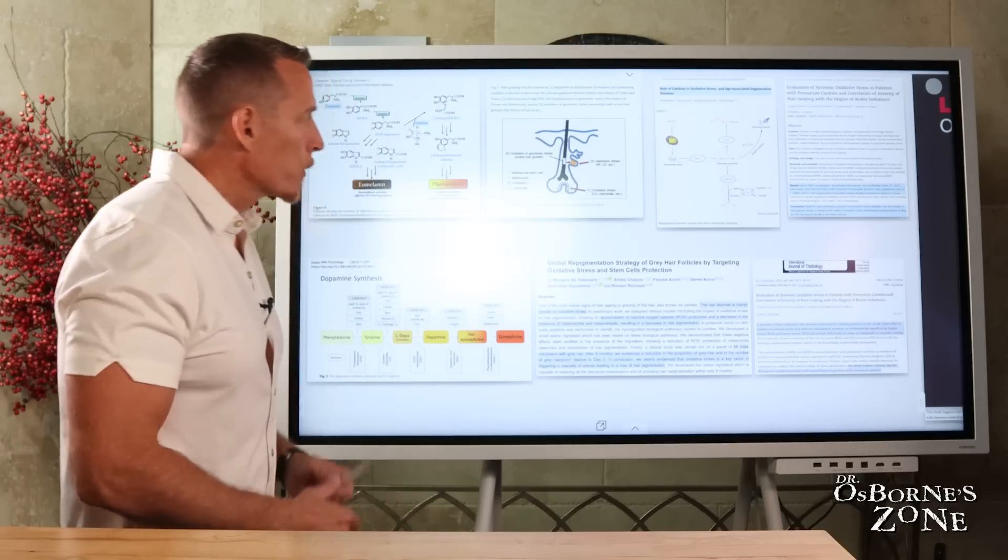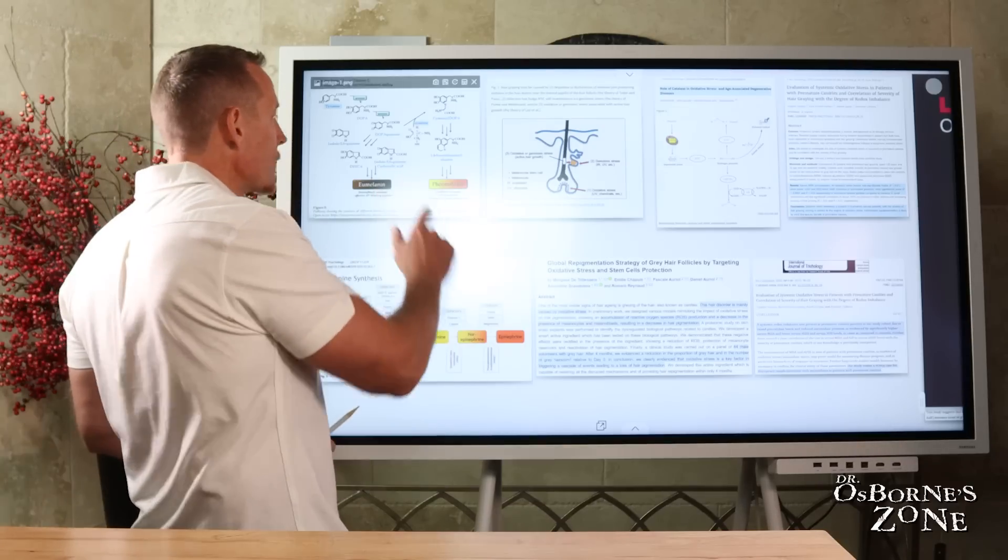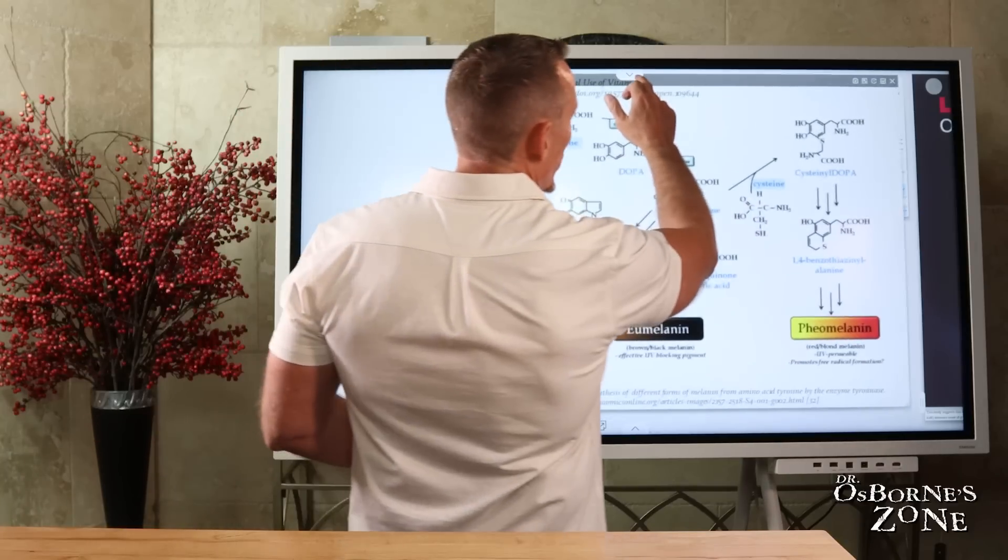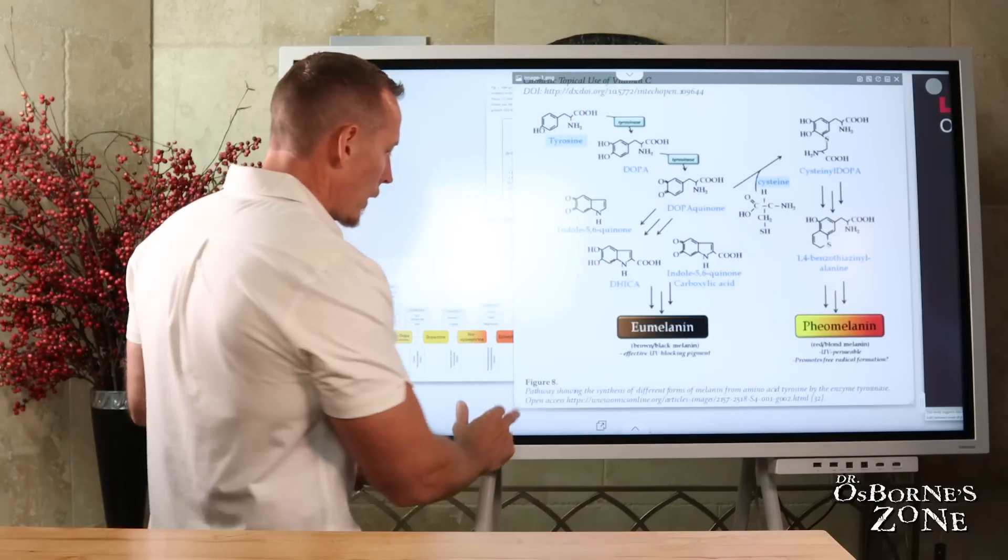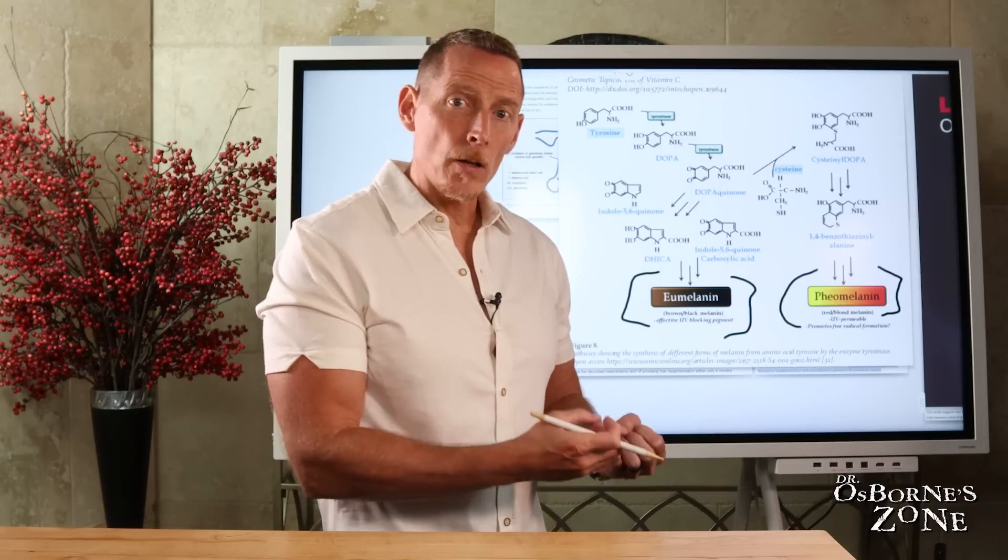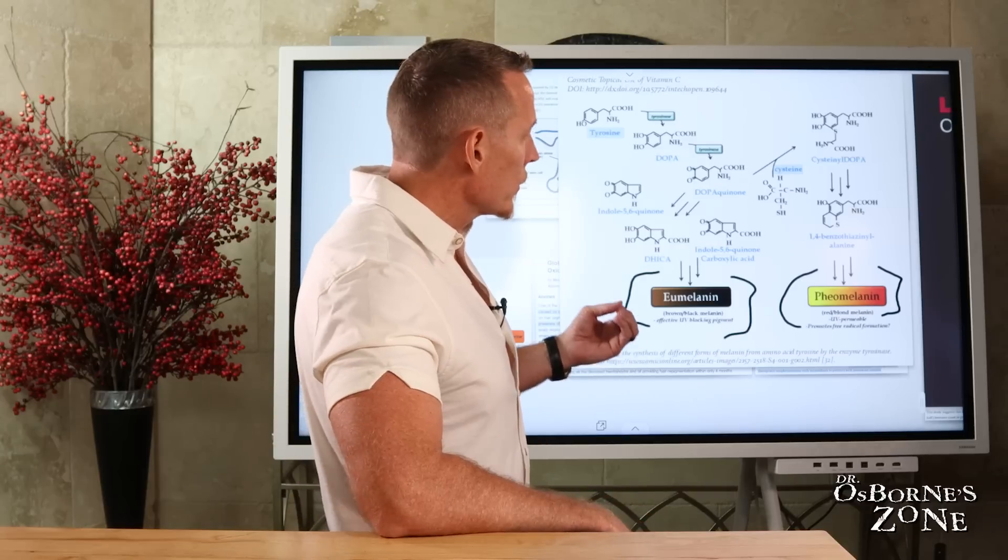If we look at the most prevalent theory on why hair turns gray, it has to do with your body's ability to produce certain types of pigments. If we blow up on this image, you can kind of see a chemical breakdown of these two substances and how they're produced. These are the melanin-based pigments that we produce in our cells, in our hair follicles, that give color to our hair.